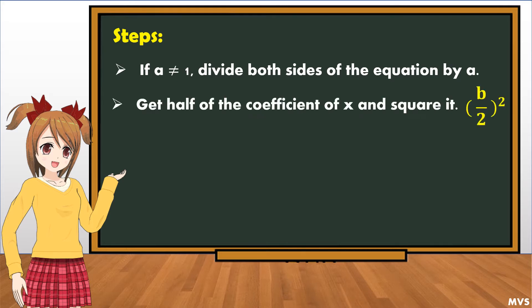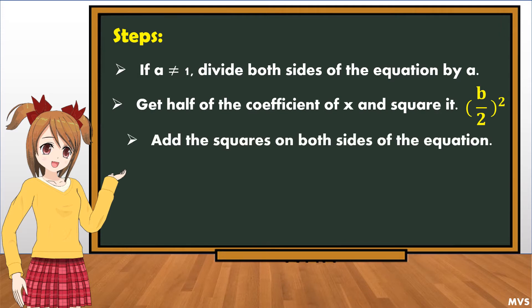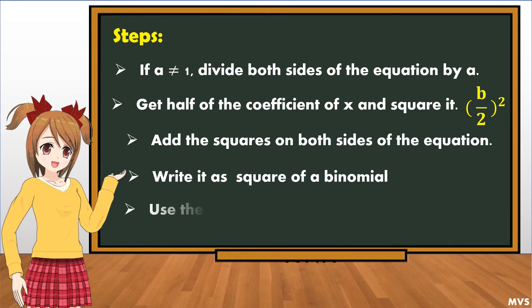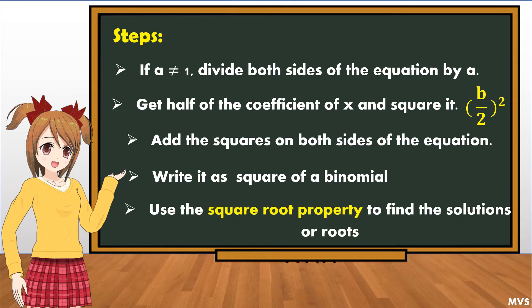Second, get half of the coefficient of x and square it. Third, add the squares on both sides of the equation. Fourth, write it as the square of a binomial. And the last step, use the square root property to find the solutions or roots.